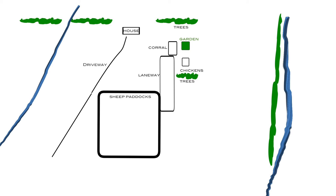A sector analysis is basically the evaluation of different flows of energy onto your property. Some examples of the different kinds of energy are water, wind, fire, and even the sun. Also included in the sector analysis are view considerations.